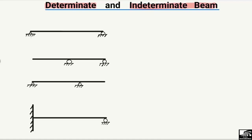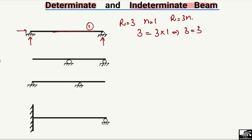The first example is a simply supported beam. The hinge support always takes two support reactions and the roller support takes one, giving three support reactions total — so r equals 3. There is only one member, so n equals 1. Applying the formula: r = 3n → 3 = 3 × 1 = 3. Since r equals 3n, this is a determinate beam, and we can use the equilibrium equations to find its support reactions.